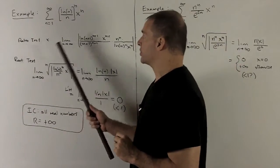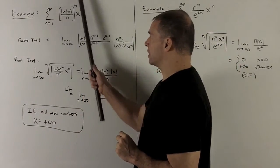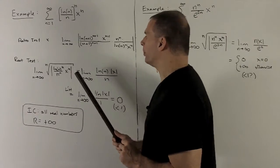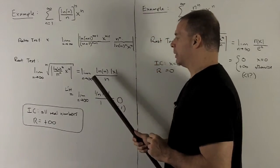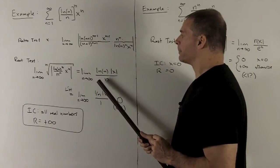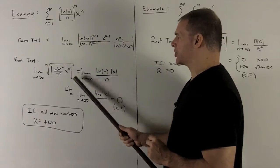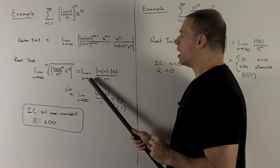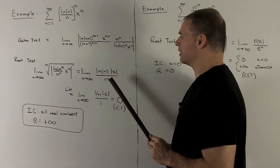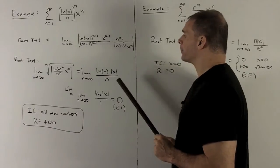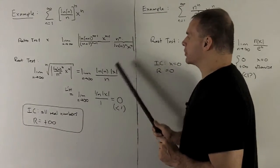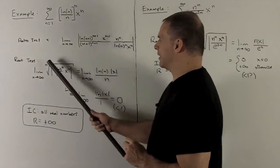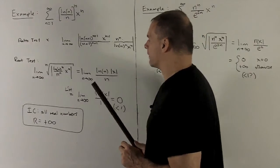The root test says: take your sequence term, take its absolute value, and then take the nth root. When I do that, that's going to leave me with the limit as n goes to infinity. I'll be able to drop the absolute value sign for the natural log and the n, because as n gets bigger than 1, natural log is always positive, and so will n. We'll have to keep the absolute value around x, but when I take the nth root, it's going to remove all of our exponents.